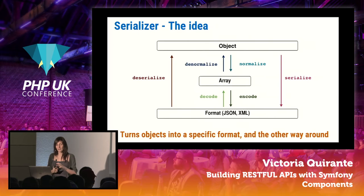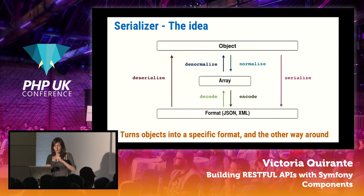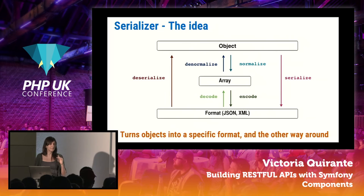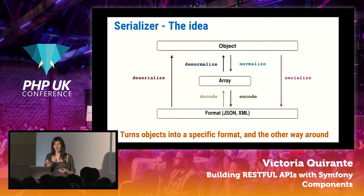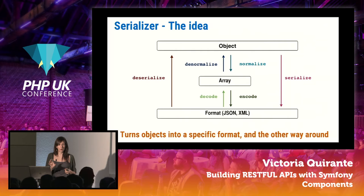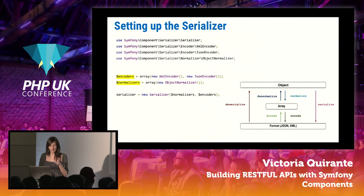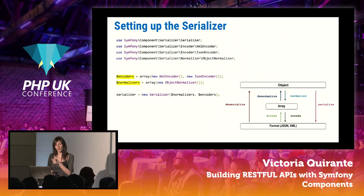The schema of the Serializer may seem complicated at first, but it isn't. You are turning objects into some format and the other way around, with an intermediate array stage. The task is split in two: encoders handle transformations between arrays and JSON, for example, while normalizers handle transformation between arrays and objects. Usually the heavy work is done by the normalizers. Before using it you need to do some setup, declaring which encoders and normalizers to use — for example XML and JSON encoder, plus the ObjectNormalizer, which is the most powerful one.